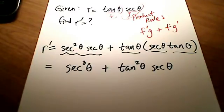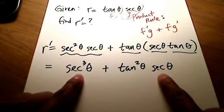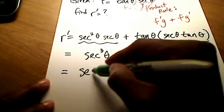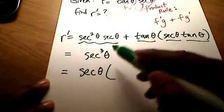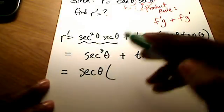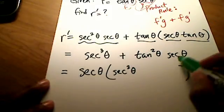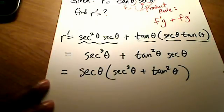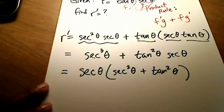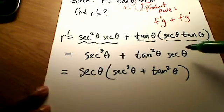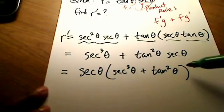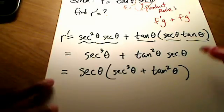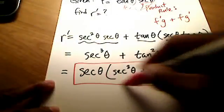There's our answer — that's probably as far as we can go. But if you want to get fancy and take a secant out of these two terms, you can do that. Taking secant theta out of both terms leaves you with secant squared theta from the first term and tangent squared theta from the last term. So both of these are equivalent answers. If this is a multiple choice question on MyMathLab and you don't see one form, here's an alternative way of writing our answer. Let me put a box around this because this is really our answer.